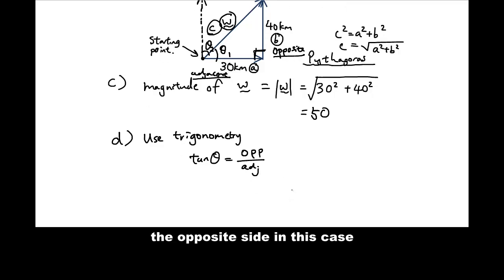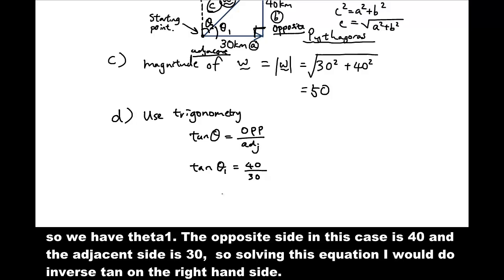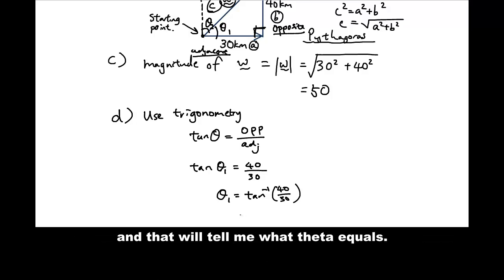Okay, and the opposite side in this case is, so we have theta 1. And the opposite side in this case is 40. And the adjacent side is 30. And the adjacent side is 30. So solving this equation, I would do inverse tan on the right hand side. And that will tell me what tan theta equals.